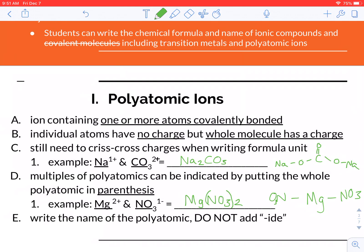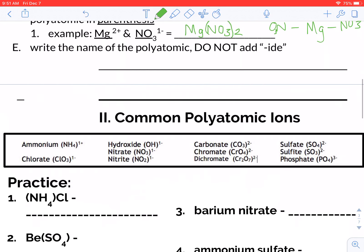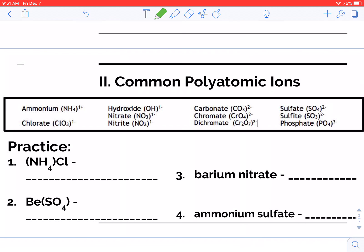When you name these, you don't add ide at the end like what we did with our other anions. You just say the name or write the name of the polyatomic. So these are the common polyatomic ions that you should be aware of for this class. There are 11. You do need to memorize these.